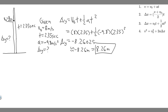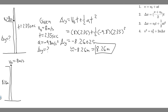Now for Part B. We'll redraw the same cliff — we know the height is 8.26 meters. But this time, instead of being thrown upward, the rock is thrown straight down with the same speed. So instead of the initial velocity going upward, it's going to go straight down. Because it's going downward, the initial velocity will be negative 8 meters per second instead of positive.